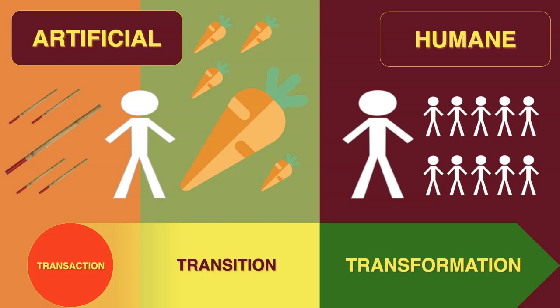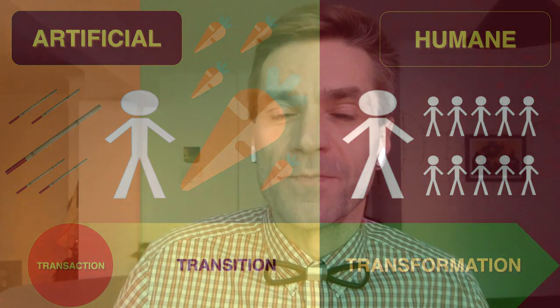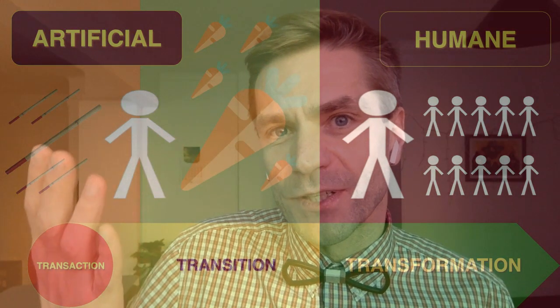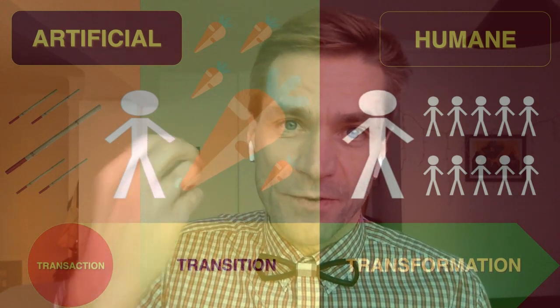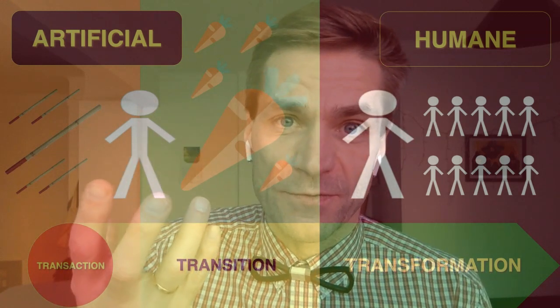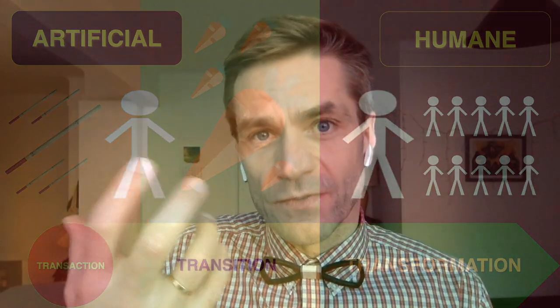We need to distinguish the third type of change: transformation. Transformation takes the same time-based perspective but removes the endpoint, which is usually the trap — making it essentially permanent. The carrots-and-sticks approach in the top corners is artificial to our human nature, whereas harnessing motivation from social influence and positive examples is more humane and rooted in our nature.